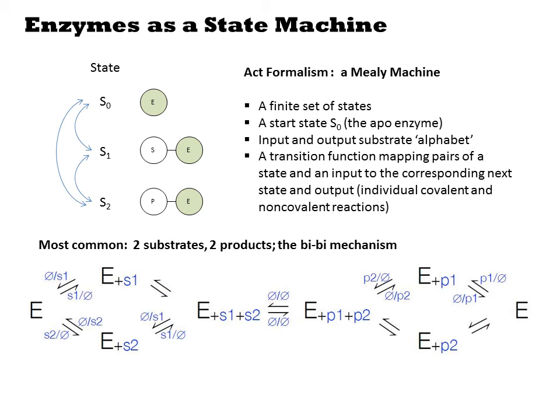Most of the enzymes observed in biological systems obey a bi-bi mechanism in which two substrates bind and two substrates are released by the enzyme. Each reaction links different states of the system, but such diagrams can be directly translated into this Mealy machine formalism.